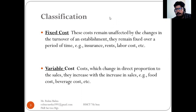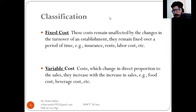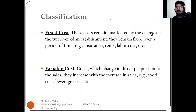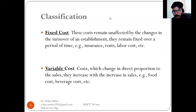Labor cost — permanent laborers whose salaries you pay at month-end — are also a fixed cost. Water supply bills are again a fixed amount you must pay. Moving to variable cost: variable costs change in direct proportion to sales. They increase with an increase in sales and decrease with a decrease in sales.